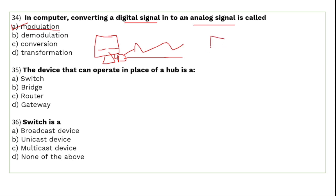When you receive data at the receiver end, the modem catches the incoming analog signals and converts them back into digital signals. This reverse process — converting analog signals back into digital — is called demodulation.